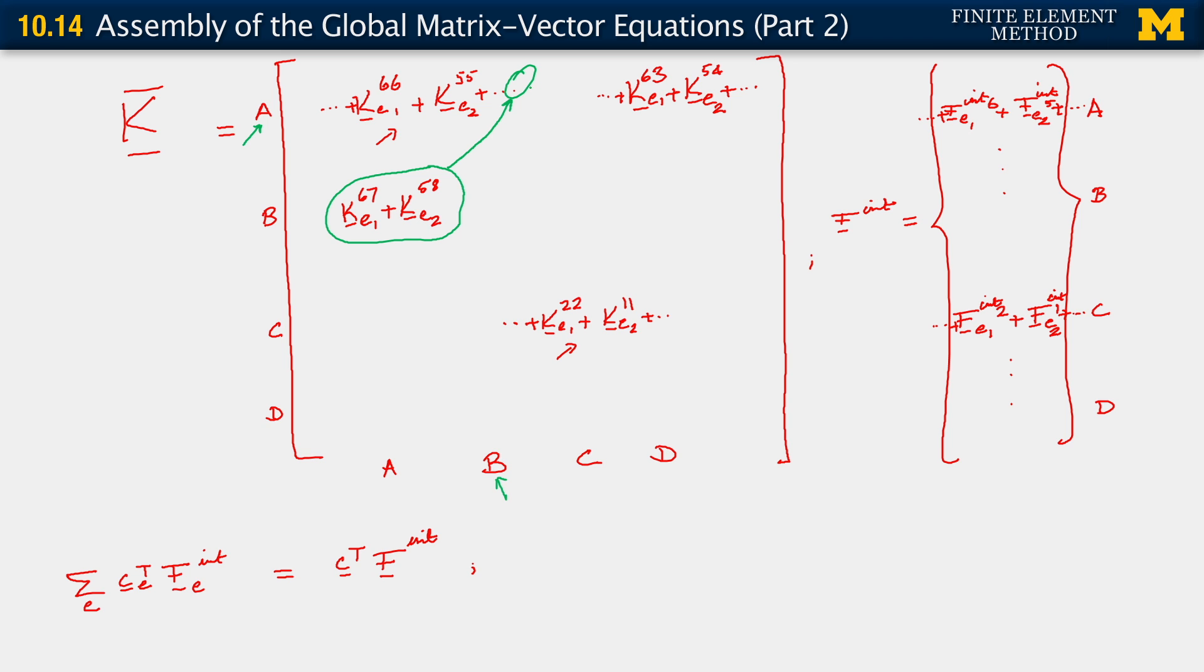With that correction, which is an important one, of course, we also note that the same sort of thing may have happened with the block that we've written out here. Let's just check that. So we have ke1 6 3 and ke2 5 4.